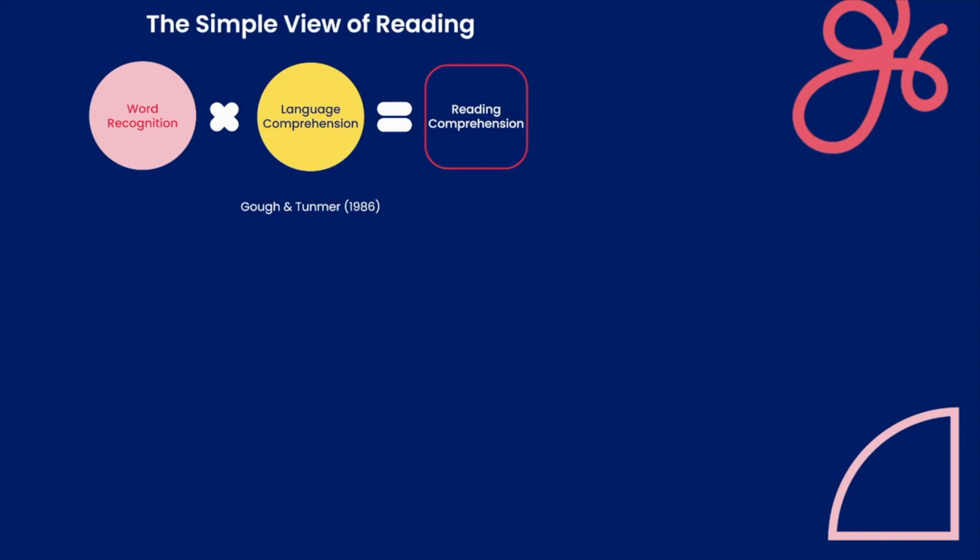For the following demonstration, we will assume a value of 0 to represent a struggle with knowledge and skills, and a value of 1 to represent proficiency with knowledge and skills.